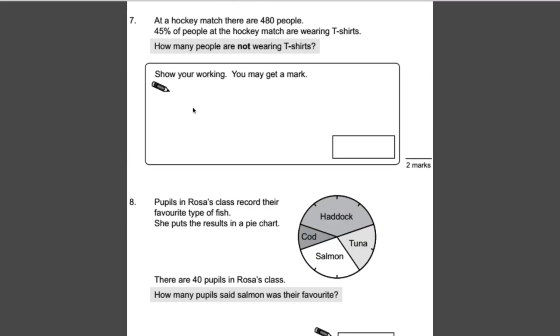Last two questions now. At a hockey match there are 480 people. 45% of people at the hockey match are wearing t-shirts. How many people are not wearing t-shirts? I think it's really important that if you see information that's relevant, give it a thorough underlining so you don't get the wrong end of the stick.